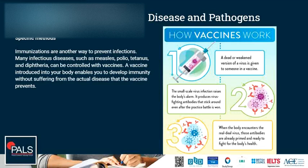So how does a vaccine work? First, a dead or weakened version of a virus is given to someone in a vaccine. The small-scale infection raises the body's alarm and activates the immune system. The immune system produces virus-fighting antibodies that stick around even after the practice battle is won, along with specialized cells that can quickly produce these antibodies again. When the body encounters the real virus, those antibodies are already there and ready to fight, and the immune system can respond very quickly.